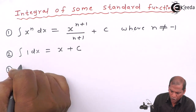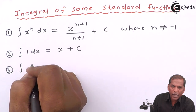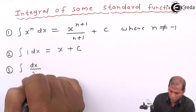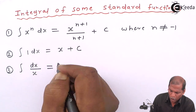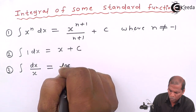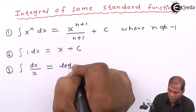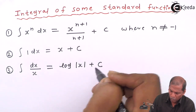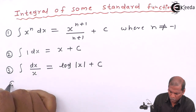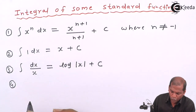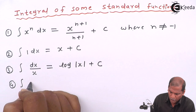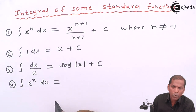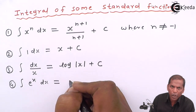Third formula: integral dx upon x is equal to log mod x plus c. Fourth formula: integral e raised to x dx is equal to e raised to x plus c.